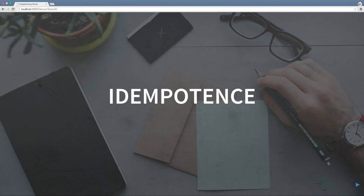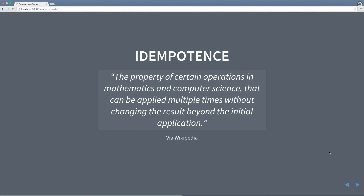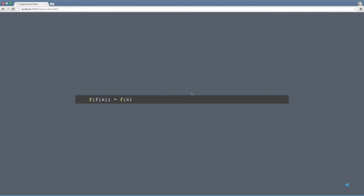If you look at Wikipedia, the definition for idempotence, it says: the property of certain operations in mathematics and computer science that can be applied multiple times without changing the result beyond the initial application. If you're still a little confused by that, you'll usually see this example here.